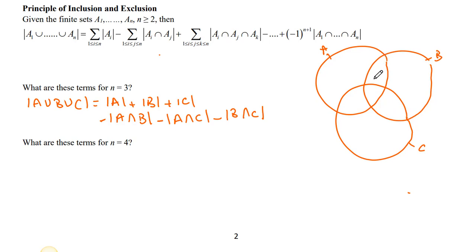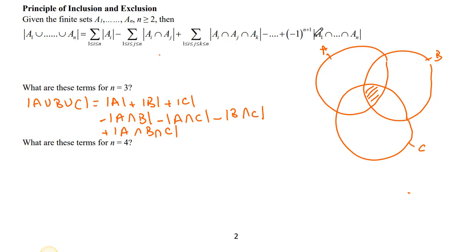We end up removing the pairwise intersections three times, which means we've subtracted too much. So we need to add back A intersect B intersect C, because we removed more than we needed to. This is the cycle: we add, we subtract, and then we add again.